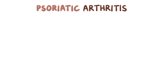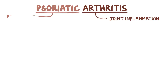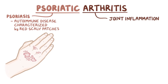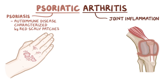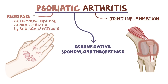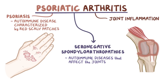In psoriatic arthritis, arthritis means joint inflammation, and psoriatic refers to psoriasis, which is an autoimmune disease characterized by red scaly patches in the skin. So psoriatic arthritis is a type of joint inflammation that happens in individuals with psoriasis. Psoriatic arthritis is also one disease in a group of diseases called seronegative spondyloarthropathies — autoimmune diseases that affect the joints with no specific autoantibodies linked to them.